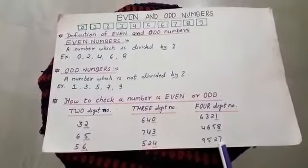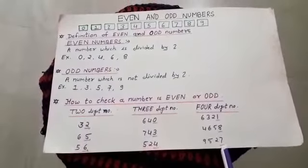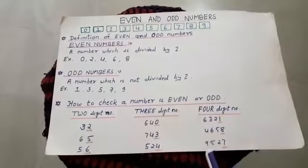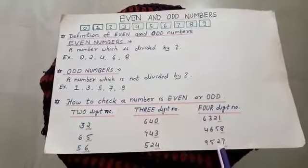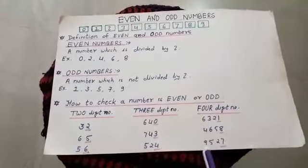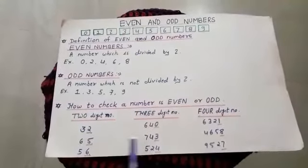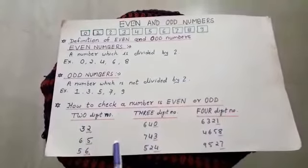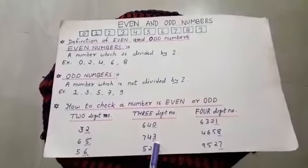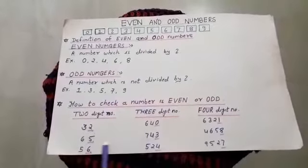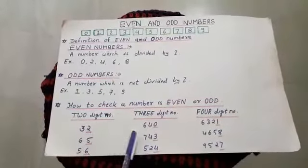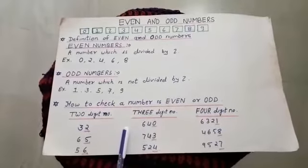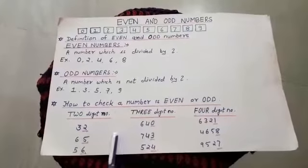The last digit is 7; 7 is an odd number, so the complete number is odd. Like that, you can find whether any number is even or odd. So children, you now understand about even and odd numbers.